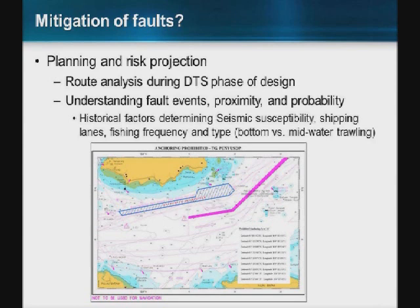Subsea cable investors and operators do significant research in terms of planning and risk projection. During the route analysis phase of the desktop study or design, they look at cable faults, proximity, probability, seismically active regions, and what type of fishing and shipping activity may cause further outages. Obviously you can't protect the entire sea, and there are certain routes you have to use just because of geography. Some government entities have recognized the value of submarine cables to their local economy and have created protection zones where ships are prohibited from fishing or dropping anchor — though creating a protection zone is completely separate from actually enforcing it.